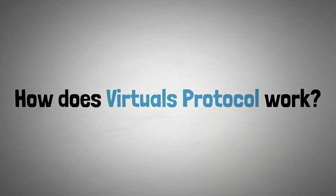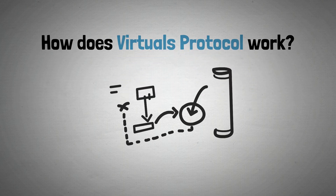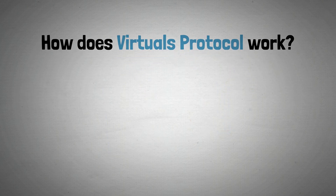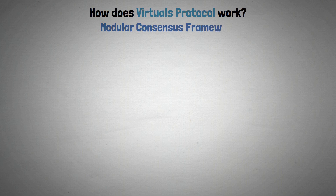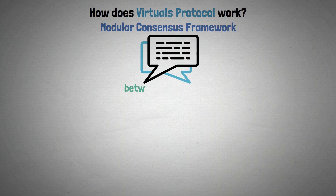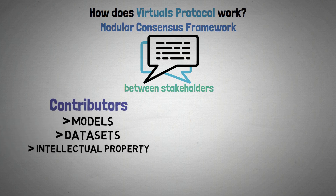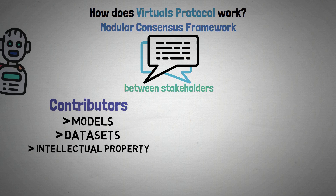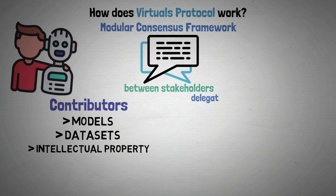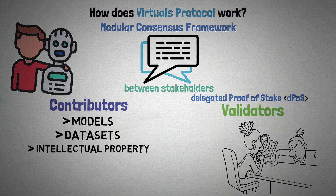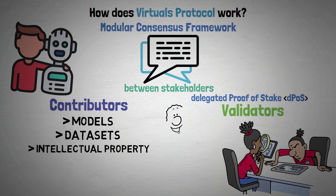Virtuals Protocol uses an architecture combined with a Modular Consensus Framework. It standardizes communication between different stakeholders. Contributors offer models, data sets, or intellectual property in order to improve AI agents. Using a Delegated Proof of Stake mechanism, validators are in charge of evaluating and approving contributions.